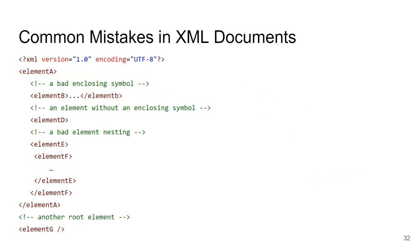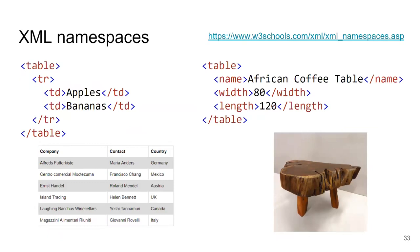Common mistakes when working with XML: having more than one root element is invalid. Bad nesting or bad enclosing symbols are errors. XML element names are case sensitive — if you open an element with capital 'B' and close it with lowercase 'b', that's invalid. An element has a start tag and an end tag. Bad nesting — for example starting element E, then element F, then trying to close E before closing F — is also invalid. This seems clear, but just wait until you are creating your SOAP requests in the tutorials.